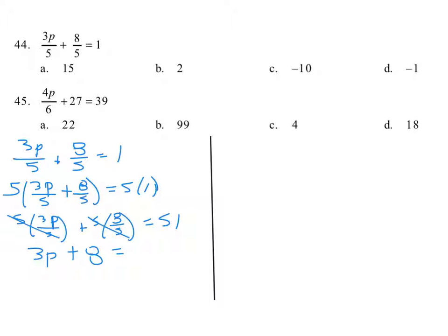And I forgot to put parenthesis around that, but 5 times 1 is 5. Now, I say minus 8, minus 8, and we get 3p equals negative 3.